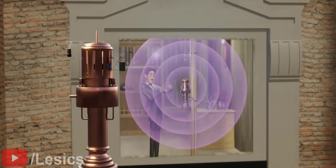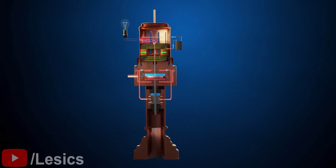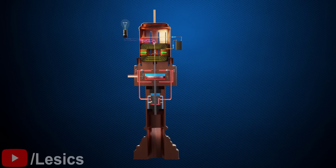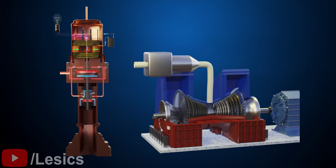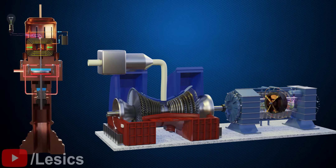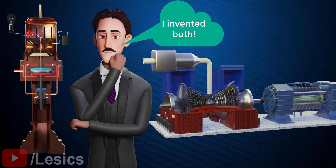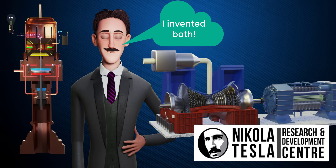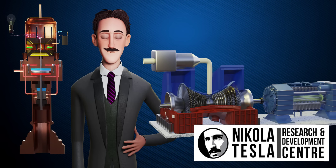Tesla's oscillator is obsolete as an electric generator. Instead, it is used in telegeodynamics. However beautiful this machine is, alternators — the rotary electric generators invented by Tesla himself — are less complex and more reliable. Only Nikola Tesla could compete with himself. We thank the Nikola Tesla Research and Development Center for their technical support of this video. To learn more about Nikola Tesla's inventions, please check out their channel and support them on Patreon.